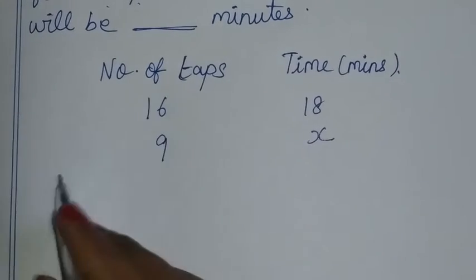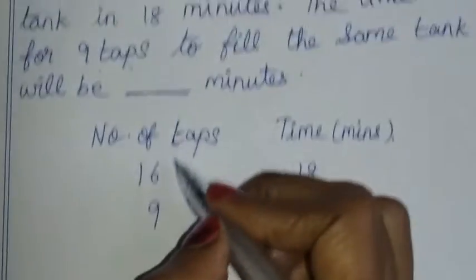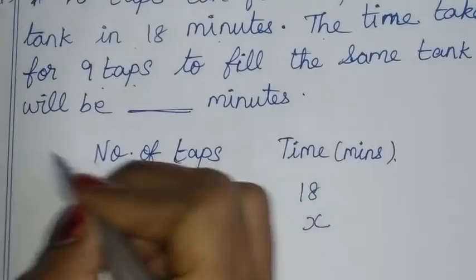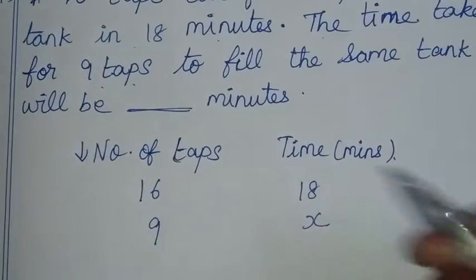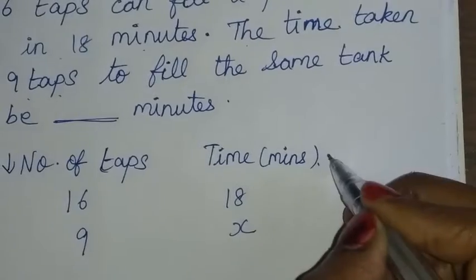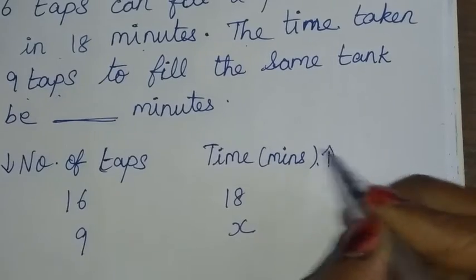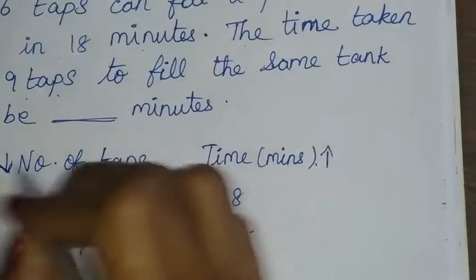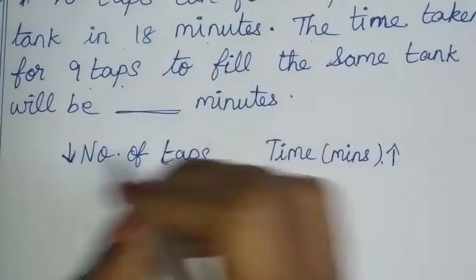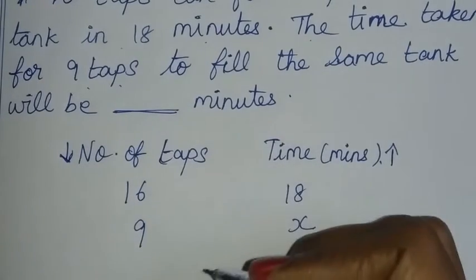The number of taps will decrease, so the time will increase. This is the opposite direction. It is inverse proportion.